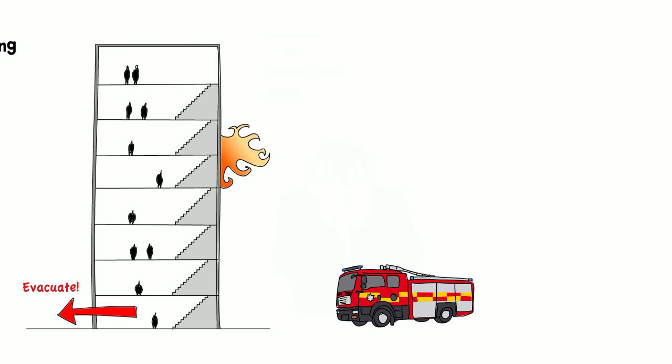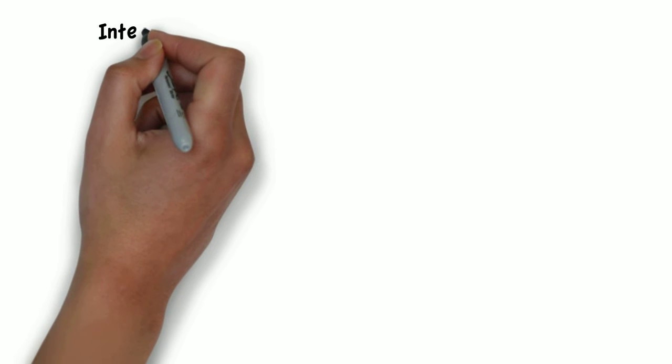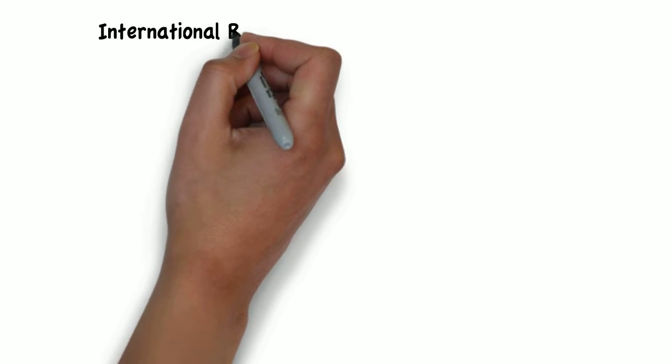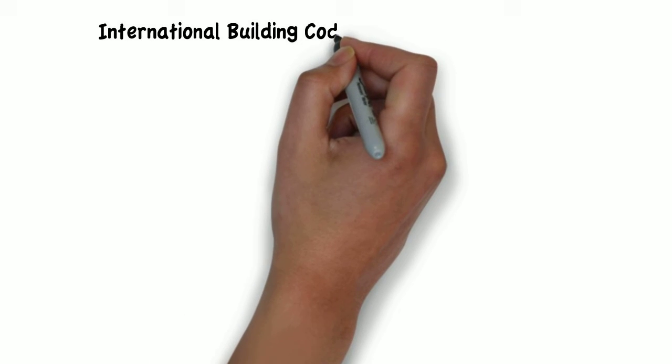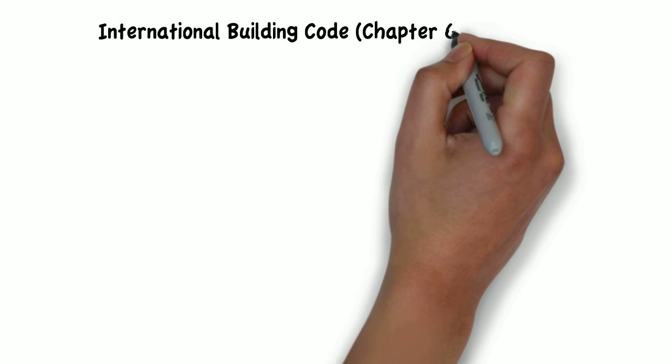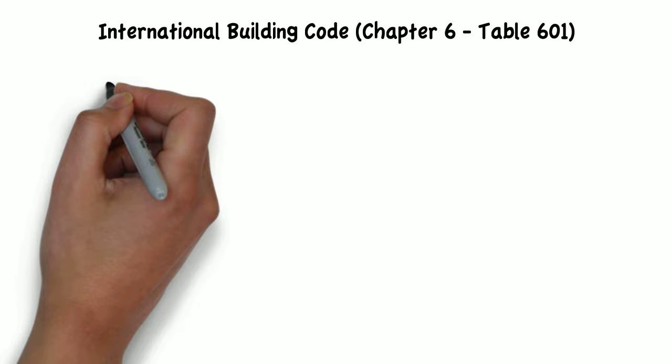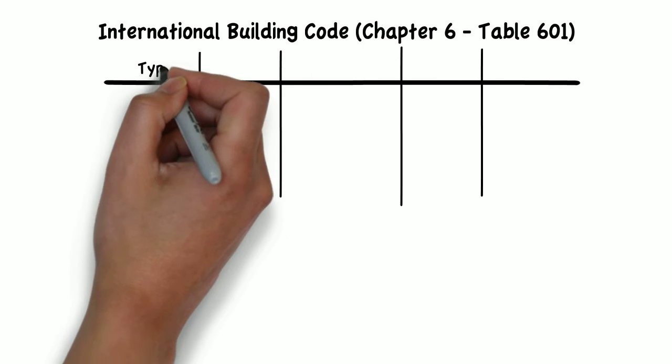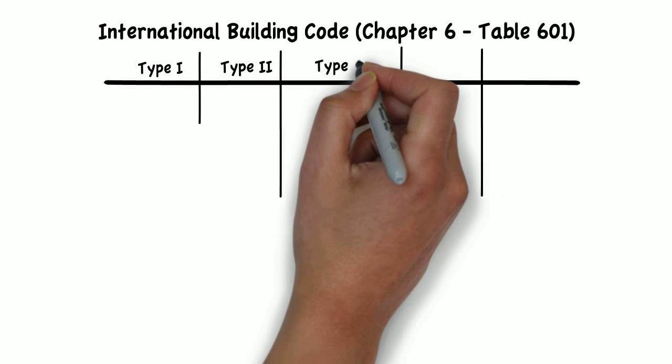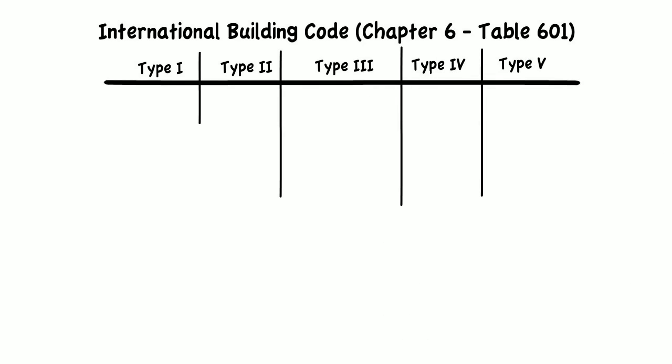Now that you have that in mind, understanding the concept of building types should be easy. The International Building Code, which most states in the U.S. base their codes on, tells us there are five types of buildings: Type 1, Type 2, Type 3, Type 4, and Type 5.